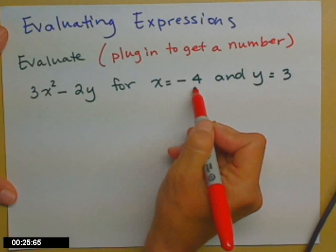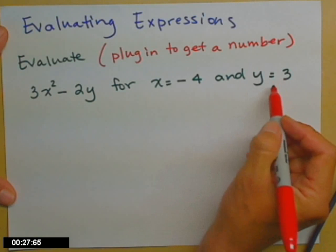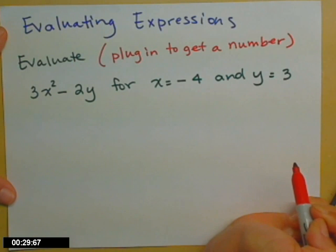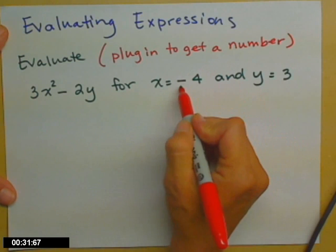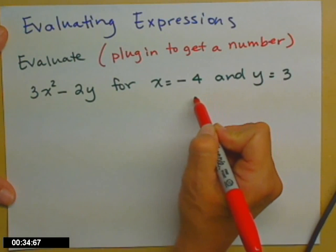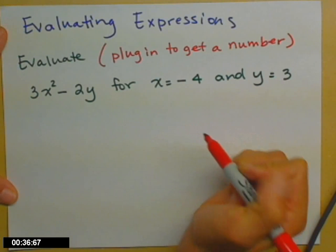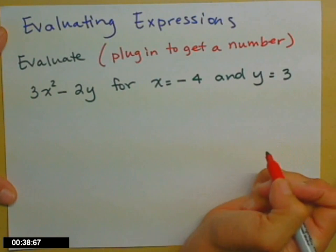So every place I have an x, I'm going to plug in negative 4, and every place I have a y, I'm going to plug in a positive 3. When I plug in typically anything, but especially negative numbers, I always put them in parentheses just to be safe.